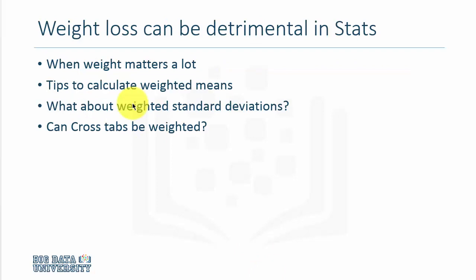There are several instances in statistical analysis when every observation in your dataset doesn't carry the same weight, and you have to account for the fact that certain observations carry more weight than the rest. That affects averages and also standard deviations. In addition, the cross-tabulations we have produced in the past could also be affected by the weights that differ among observations.